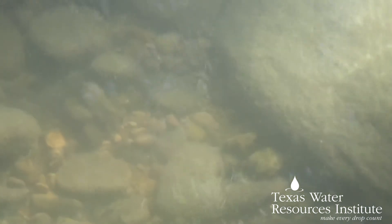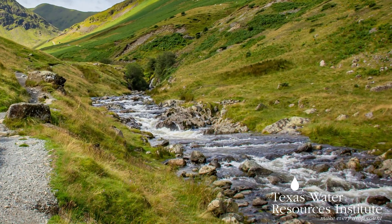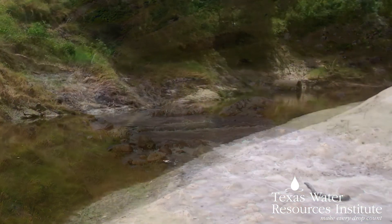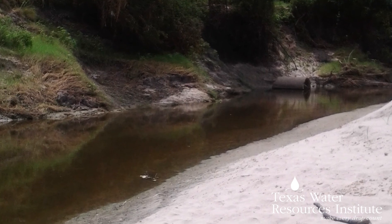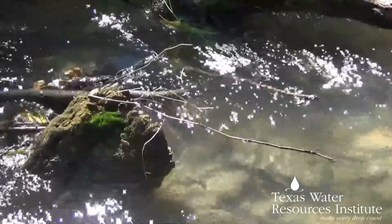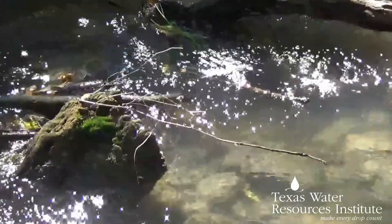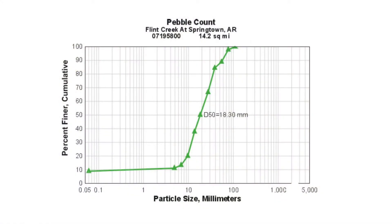The composition of a stream bed substrate tells you something about the stream's character. For example, steep mountain streams with beds of boulders and cobbles act differently than relatively flat streams with beds of sand or silt. This difference can be documented by describing the bed material — a process called a pebble count. A pebble count can help analyze and classify a stream. We are wanting to gather enough samples to plot the information and find the D50 value, which is the average size of your stream bed substrate. Figuring out this value helps you determine if a restoration project is needed and how big and expensive a job it might be.